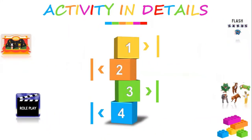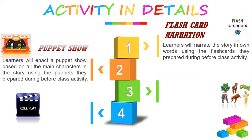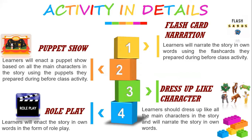In detail: Station 1 learners will narrate the story using flashcards prepared during the before-class activity. Station 2 learners will enact a puppet show based on the main characters using puppets they prepared. Station 3 learners will dress up like the main characters and narrate the story. Station 4 learners will enact the story in the form of a role play.